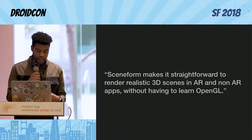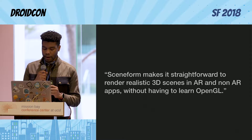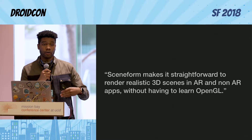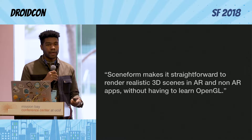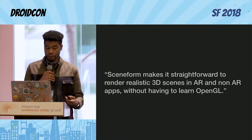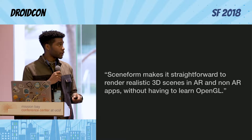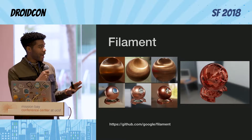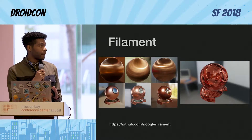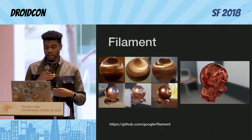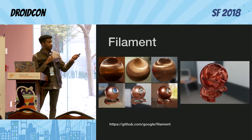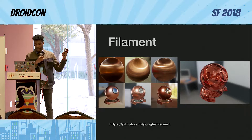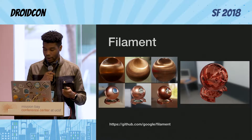Sceneform includes a lot of helpful things, but one important thing to point out is that it has its own physically-based renderer, or PBR, provided by Filament — a library also provided by Google. What it does is it just adds a physics touch to your AR objects. Sceneform is utilizing this, so you can make your objects look a bit more real. You can even see the reflection of the room on the Death Star's skin in the example, which is really impressive.